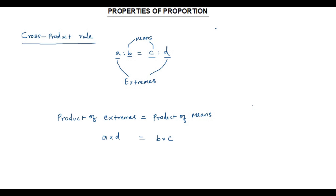Let us consider a small problem to understand how the cross product rule works. The ages of two persons are in the ratio 3 is to 4, and the age of the first person is 45 years. We have to find the age of the second person. The ratio between the ages of two persons is given as 3 is to 4, and the age of the first person is 45 years.